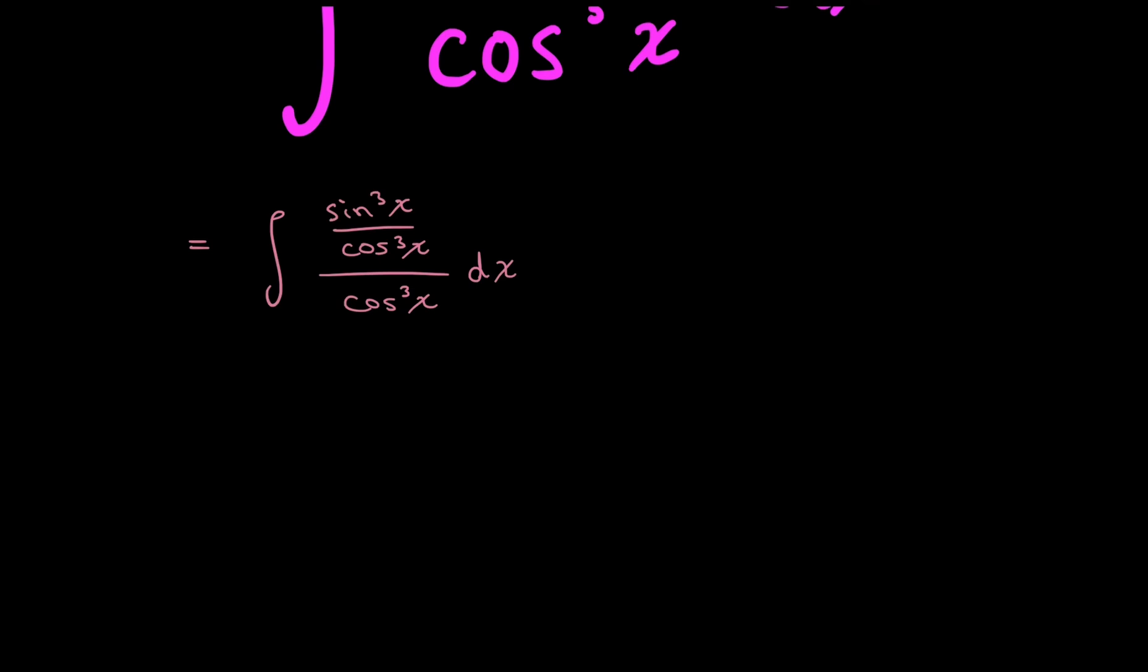Now to simplify things, I'll just be taking this cosine cubed x down there so that it multiplies by that other cosine cubed x. And so my integral now looks like sine cubed x over cosine to the power of 6x dx.